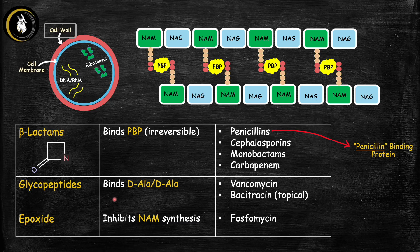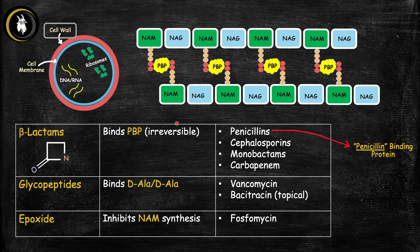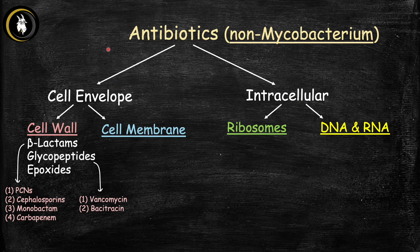Glycopeptides work differently: instead of mimicking d-ala-d-ala, they bind directly to d-ala-d-ala, inhibiting its interaction with PBP and also blocking the glycan backbone from growing. This weakens the cell wall and causes bacterial lysis. The main drugs are vancomycin, given systemically, and bacitracin, a topical antibiotic. The third class, epoxides, inhibits NAM synthesis — one of the disaccharides in the glycan backbone — preventing cell wall formation. The main drug here is fosfomycin. So in summary, cell wall inhibitors include beta-lactams, glycopeptides, and epoxides.